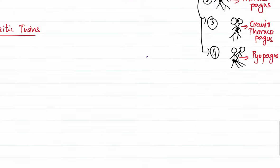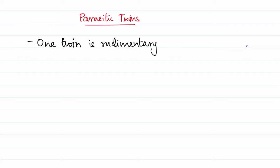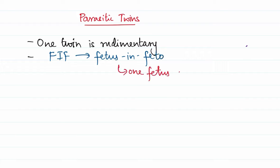Now let's move to the last topic for this video: parasitic twins. Parasitic twins means one twin is rudimentary whereas the other develops. In extremely rare cases, one fetus develops inside another fetus, and such a condition is called FIF — fetus in feto. This is an extremely rare condition where one fetus develops inside another.